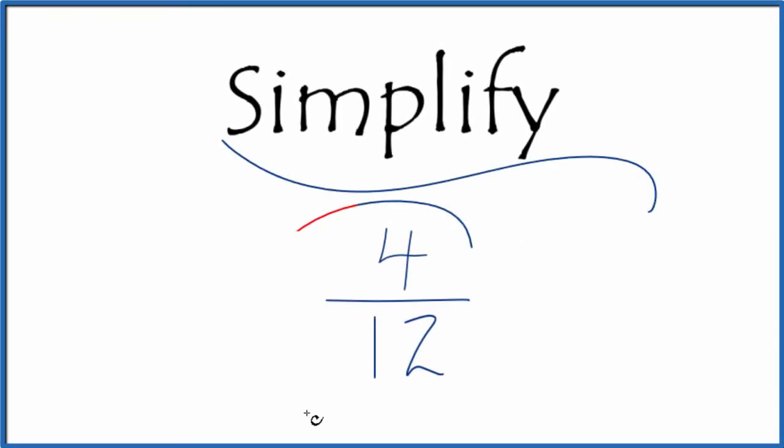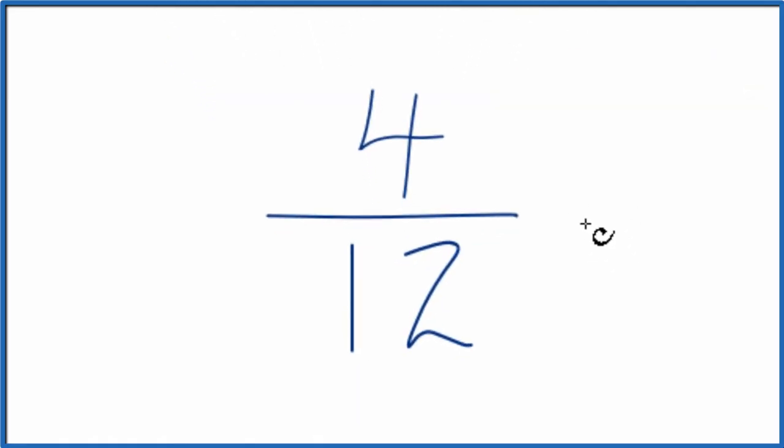Let's simplify the fraction 4 twelfths. And here's how we do it. We're trying to find another fraction that's equivalent, that has the same value as 4 over 12, but we want it in lowest terms.